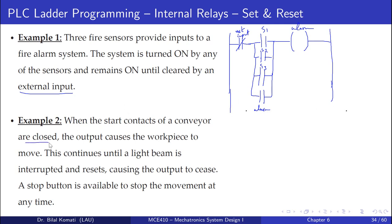The next example: when the start contacts of a conveyor are closed, the output causes the workpiece to move. This continues until a light beam is interrupted and resets, causing the output to cease. A stop button is available to stop movement at any time. So the conveyor moves until the light beam is detected, and we have a stop button to stop it at any time.